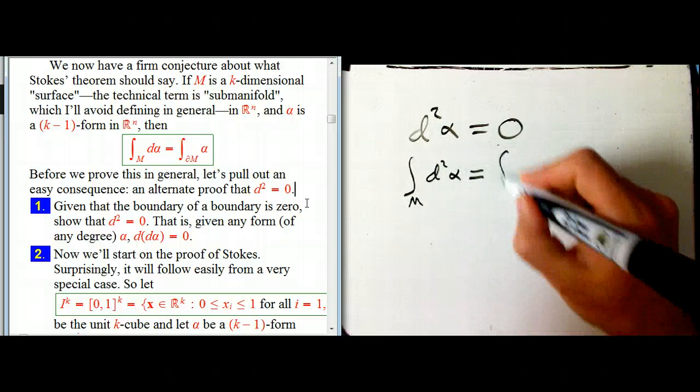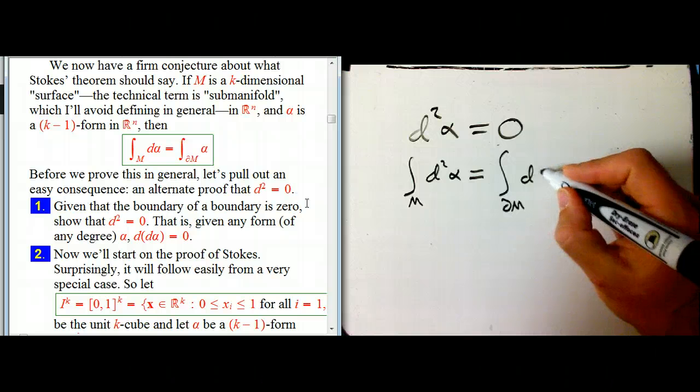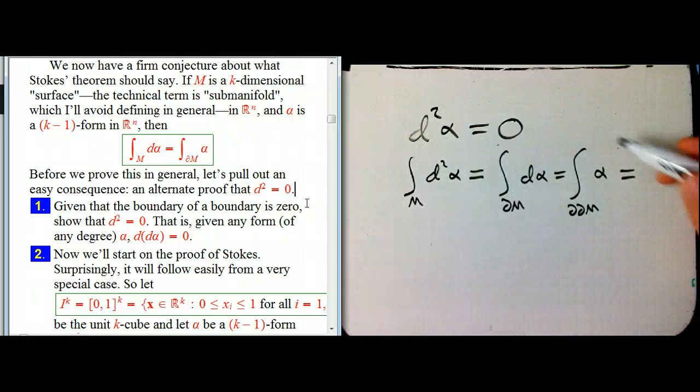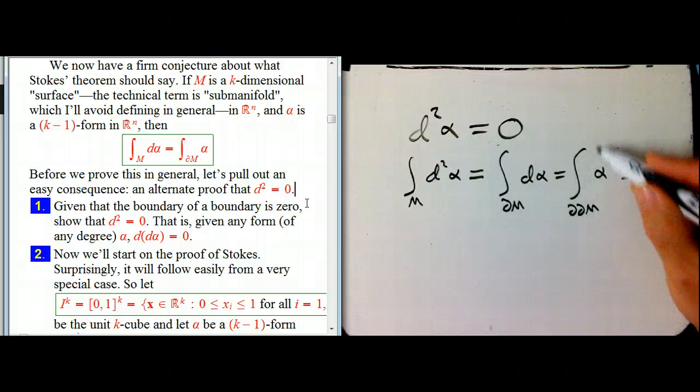And then I'm just going to use Stokes' theorem twice. That's the integral of the boundary of d alpha, but that's the integral over the boundary of the boundary of alpha. No matter what alpha was to start with, no matter what M was to start with, that's the integral over nothing, and that's zero.